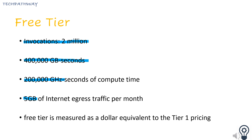The deduction of free tier usage is based on whether the region in which the function is running is in tier 1 or tier 2. In other words, if a function is running in a region with tier 1 pricing, the deduction is based on tier 1 pricing. Likewise, if a function is running in a region with tier 2 pricing, the deduction is based on tier 2 pricing.